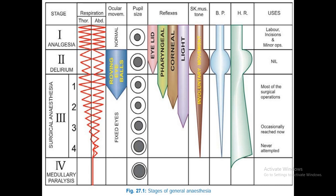Stage two is delirium. In this stage, the respiratory center gets depressed, revolving eyeballs occur, and reflexes are affected. Skeletal muscle tone, blood pressure, and heart rate are affected. No surgical procedure is performed during this stage. Stage three is further divided into four planes.